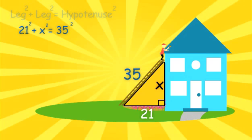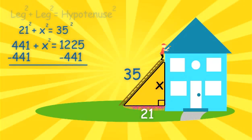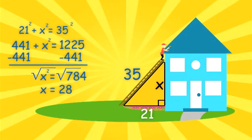21 squared is 441. I'll bring down my X squared. And 35 squared is 1225. Now we can subtract 441 from both sides of the equation to isolate the X variable. X squared equals 784. Finally, we square root both sides of the equation and X equals 28. So if the painter falls, he will fall 28 feet down.